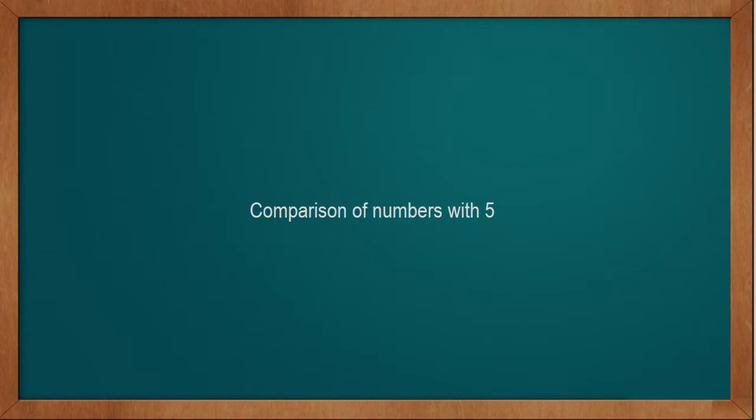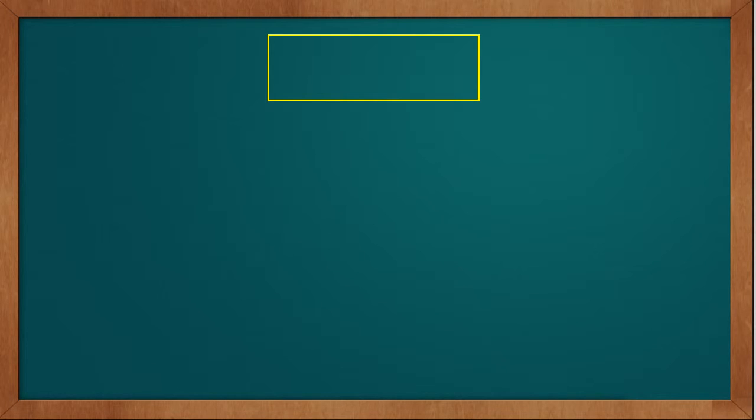Now we will repeat this with another number. We will compare 5 with other numbers and see the comparison of numbers with 5. For comparison with 5, first we will take 5 bananas: 1, 2, 3, 4, 5. We have 5 bananas.